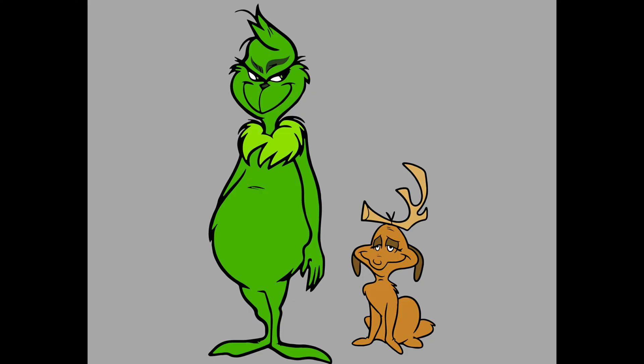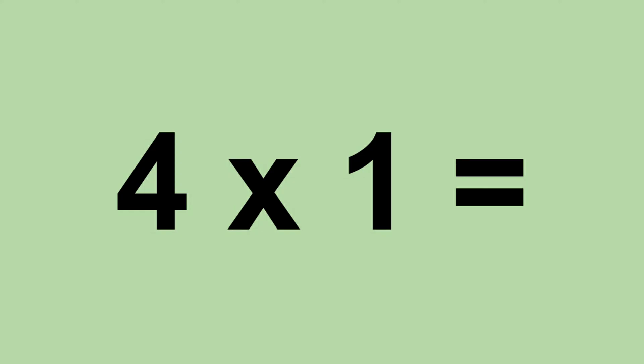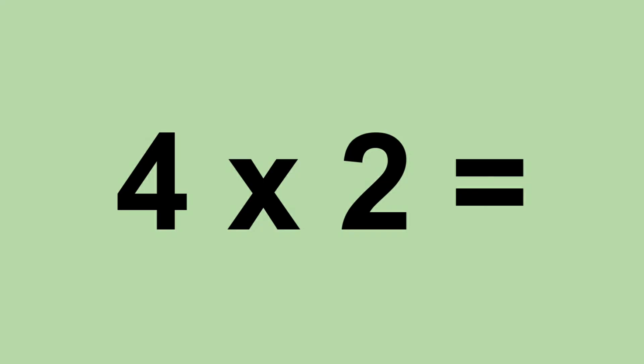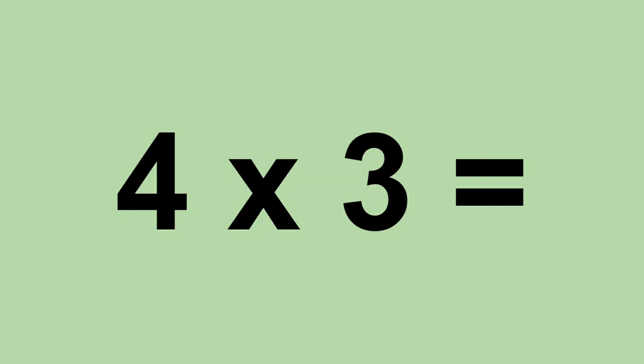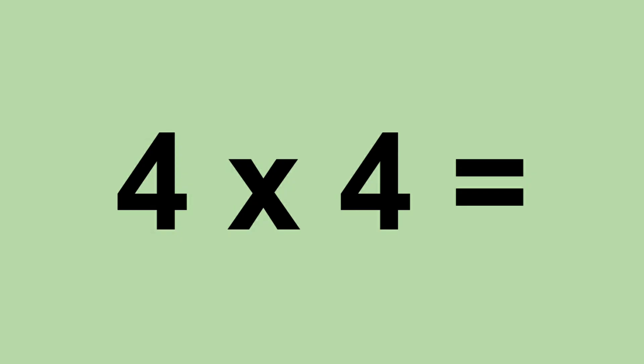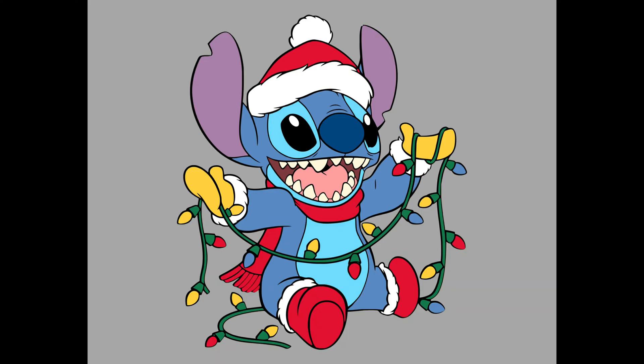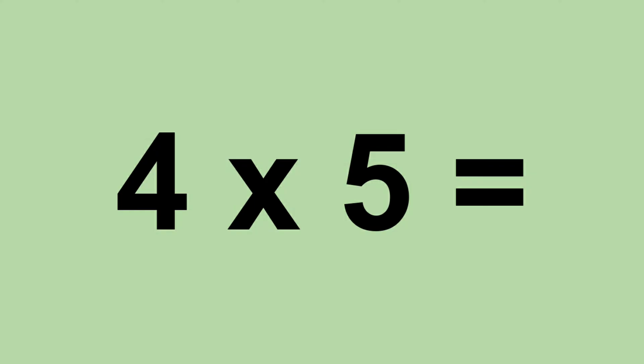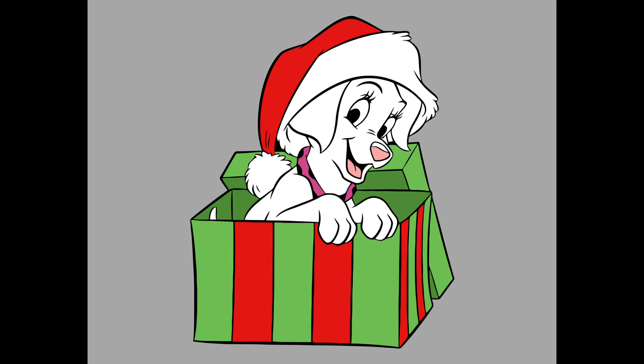Four times zero equals zero. Four times one equals four. Four times two equals eight. Four times three equals twelve. Four times four equals sixteen. Four times five equals twenty. Four times six equals twenty-four.